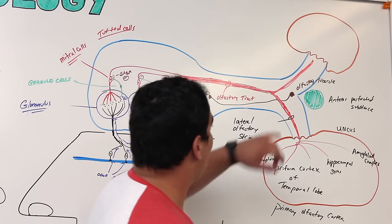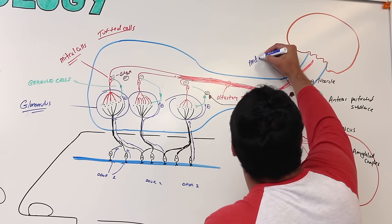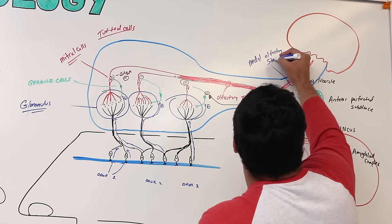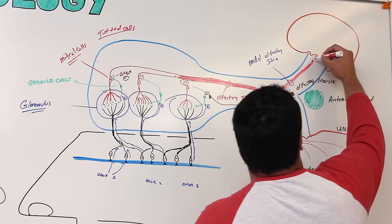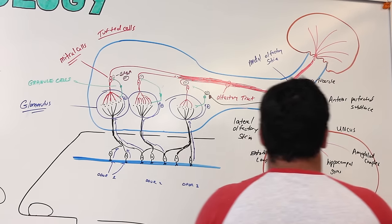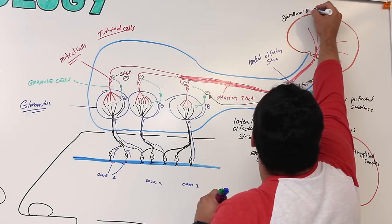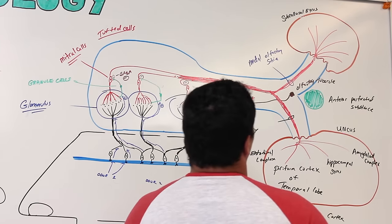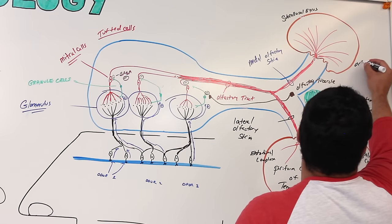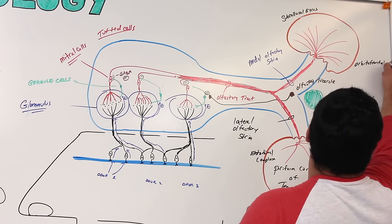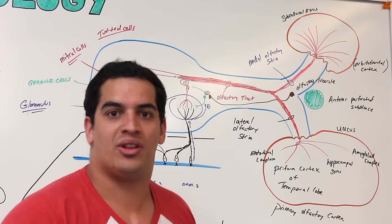The other fibers are called the medial olfactory striae. These medial olfactory striae give branches to the para-olfactory area and go to a specific gyrus called the subcallosal gyrus. They also give some fibers to the orbitofrontal cortex on the frontal lobe — that's considered the secondary olfactory area, believed to be more aligned with determining the reward value of olfaction.